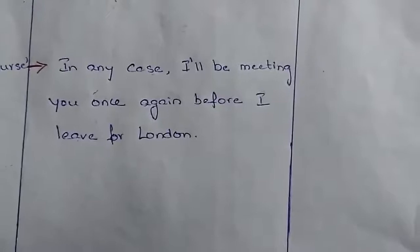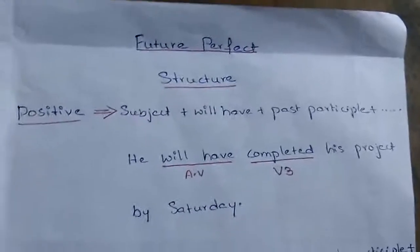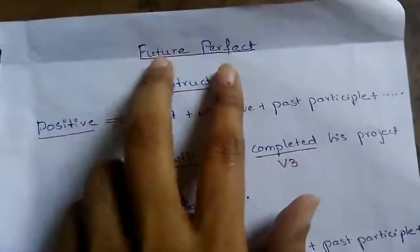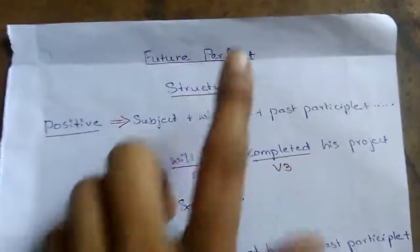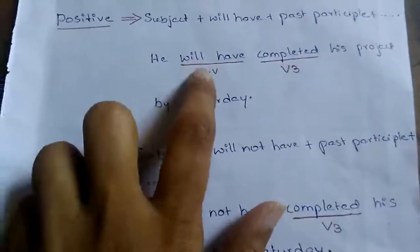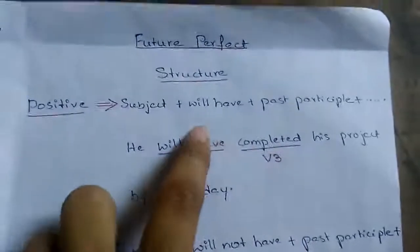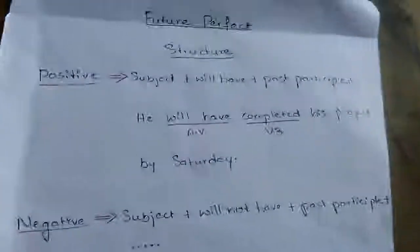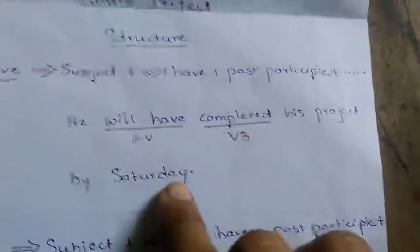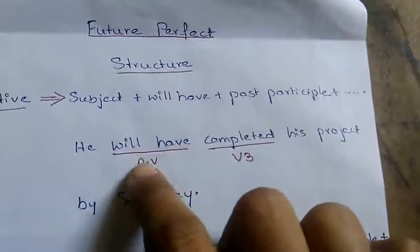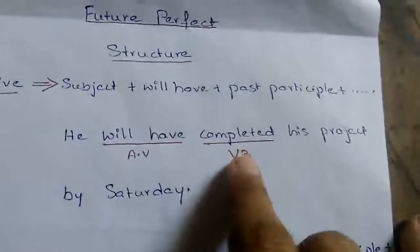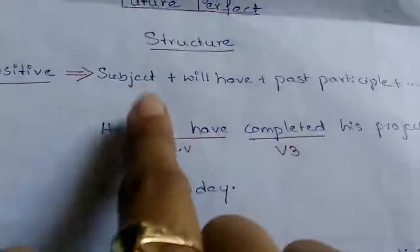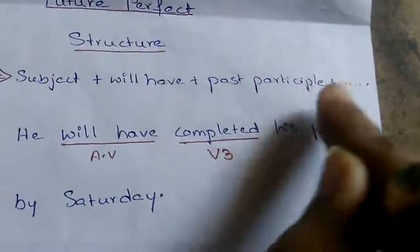The third type of future tense is future perfect tense. As you know, two things are present here: one is future indication and the other is perfect indication. 'Will' is the helping verb indicating future tense, and 'have' is the helping verb indicating perfect tense. Since it is future perfect, we use both helping verbs. For example: 'He will have completed his project by Saturday.' The structure is: subject plus will have plus past participle plus the rest of the sentence.